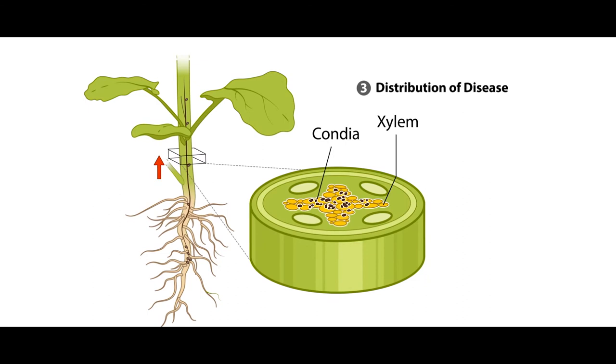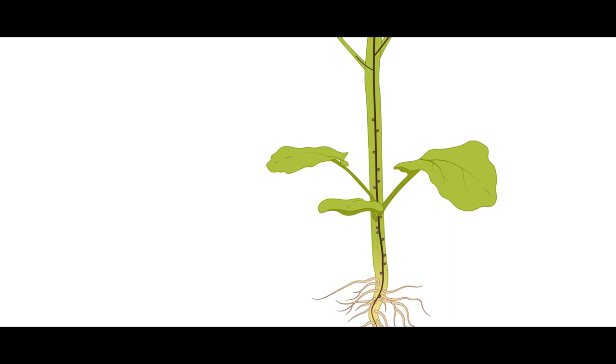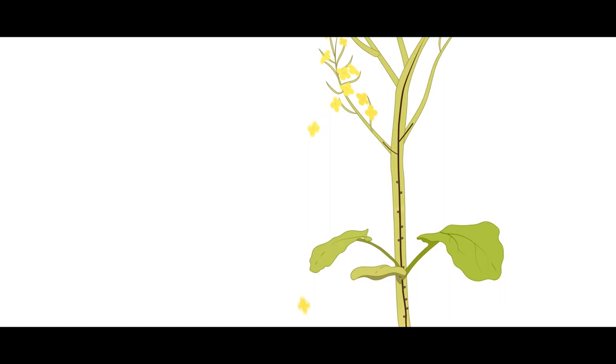This prevents the regular flow and functionality of water and nutrients up to the plant tissues and eventually causes the xylem to plug, turn black, collapse, and shrivel.